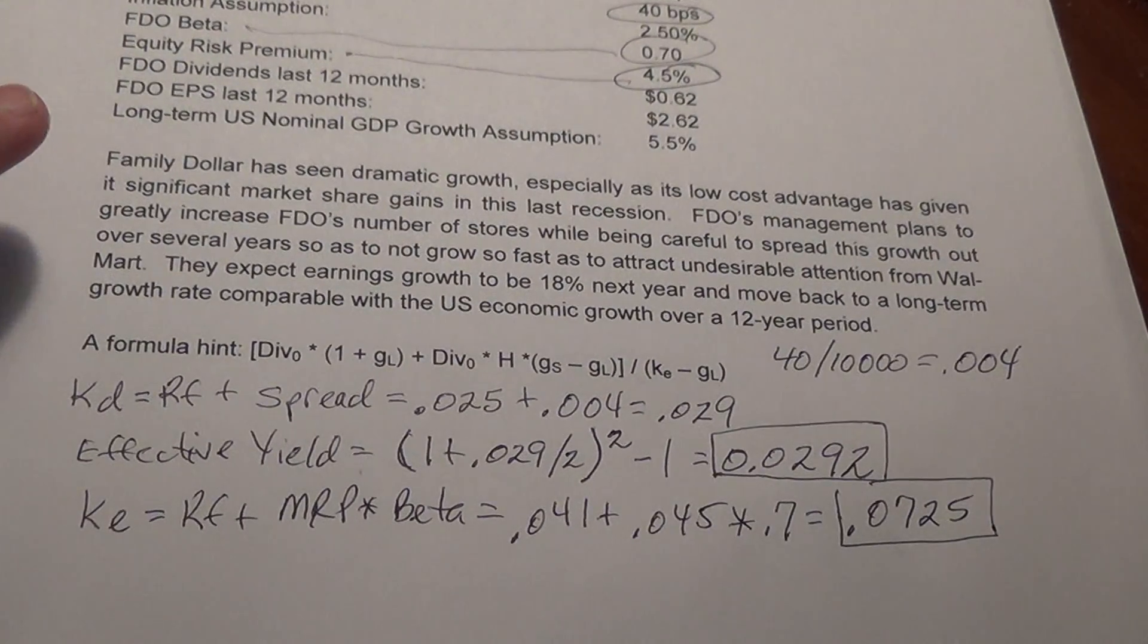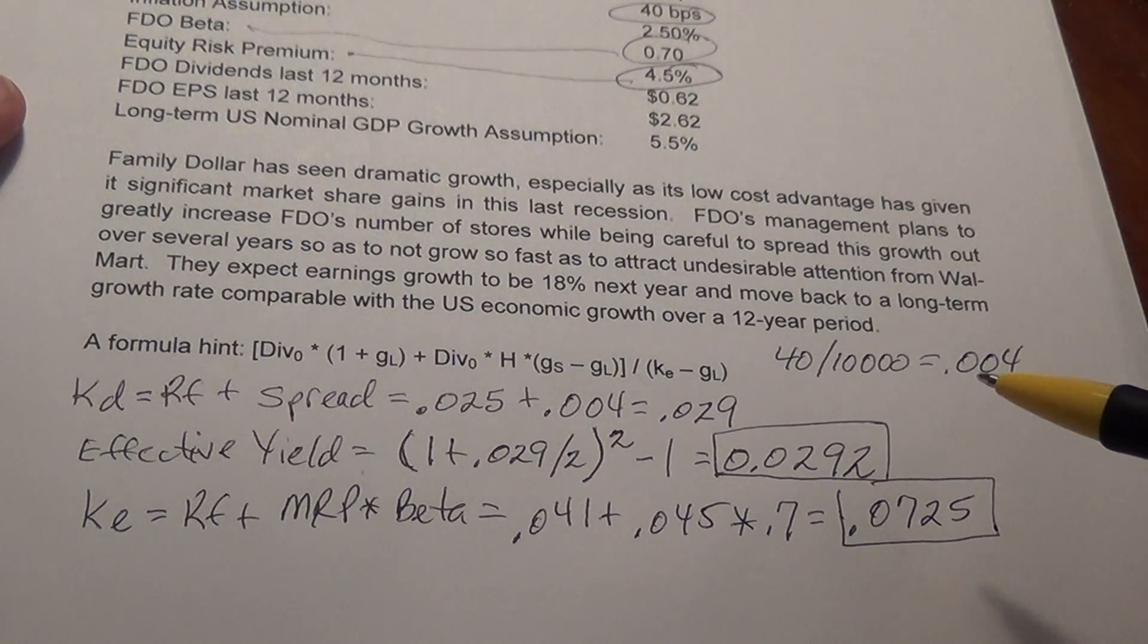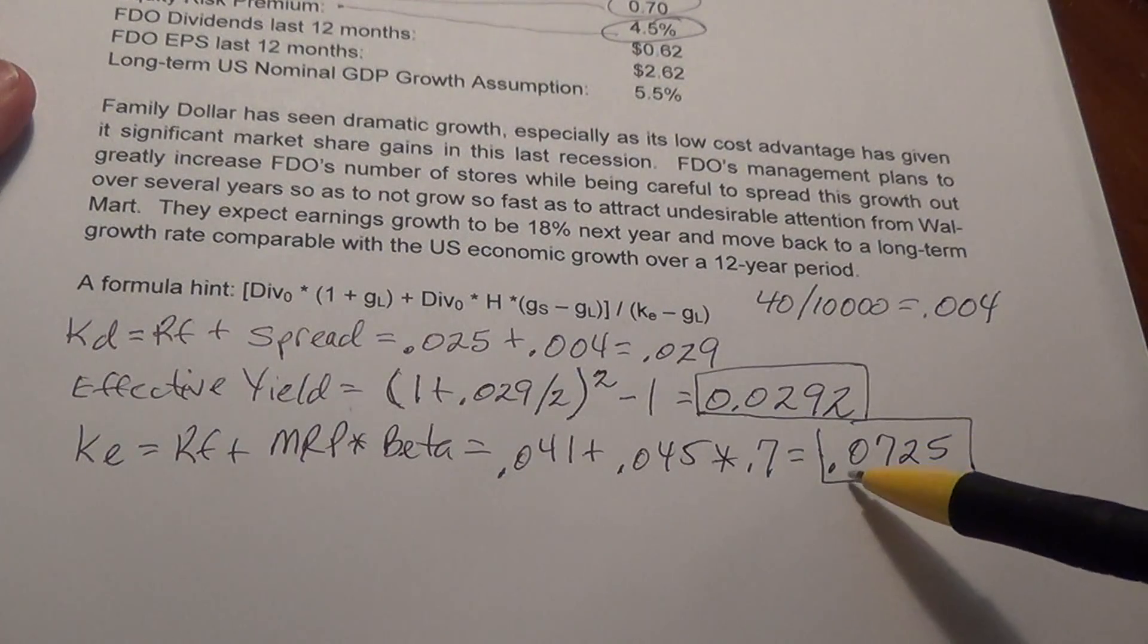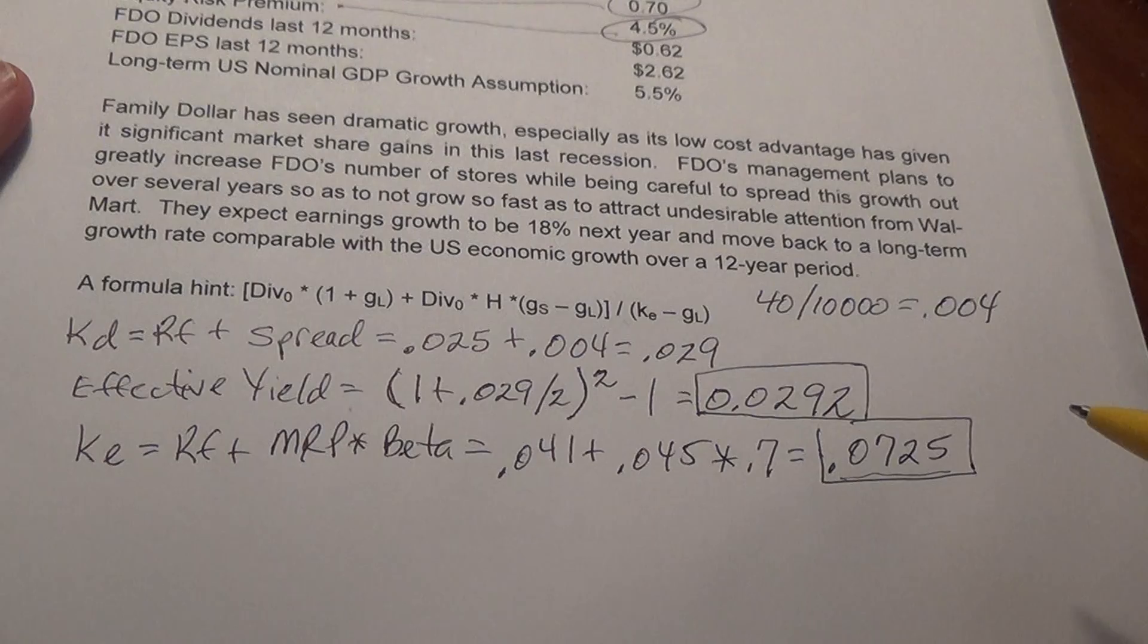In this second video working through example two for quiz four, I'm now going to price the stock. Remember in the first video we got a discount rate for the stock at 7.25% or 0.0725.